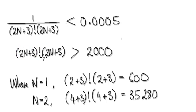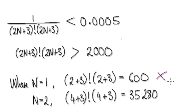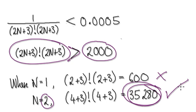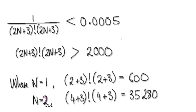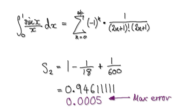Because of the factorial, we don't have an elegant way of solving it, so let's just guess. When n equals 1, this whole thing is 600. Well, 600 is less than what we need, so n=1 is no good. When n equals 2, this whole thing is bigger than 2000, so it would be good. Therefore capital N equals 2, which means we need 3 terms, and then we would be within our level of accuracy.